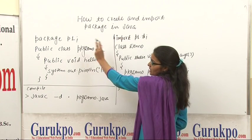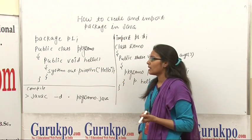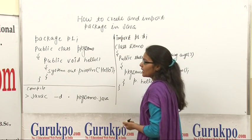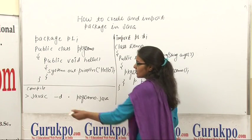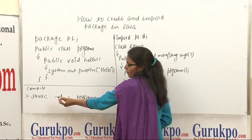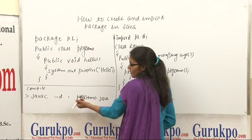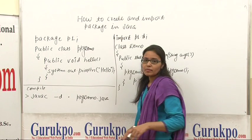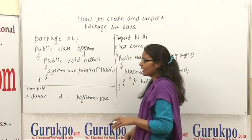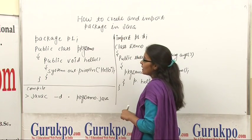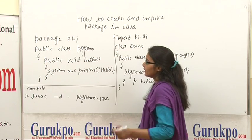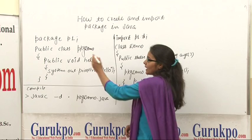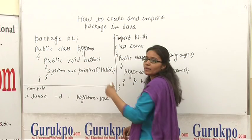Now a package is created through this example. Next we will compile this package class. For compilation you have to give the command: javac -d . PackageDemo.java. When you press enter, a directory will be created with the name p1, and in this directory a class file of PackageDemo will be created.